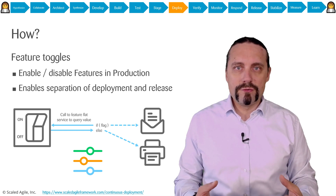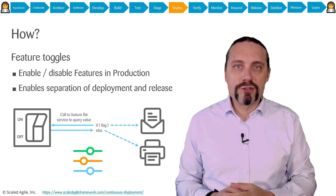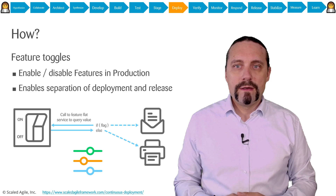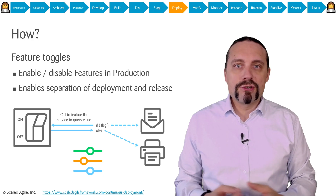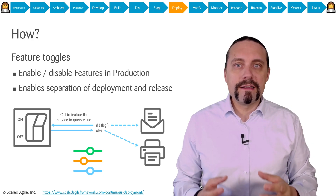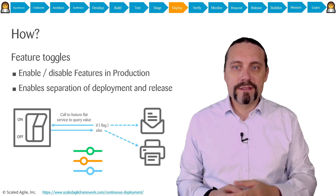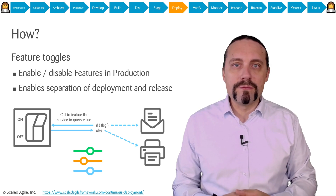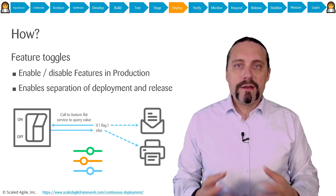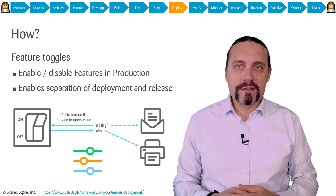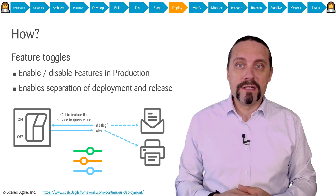To enable this separation we need feature toggles, or feature switches, which allow us to switch features on and off. A feature toggle is essentially an if statement — for example: if flag is set, send an email; if flag is not set, print out the document. Please be careful when introducing feature toggles, because each toggle is a test, and having multiple toggles means a lot of things to test.